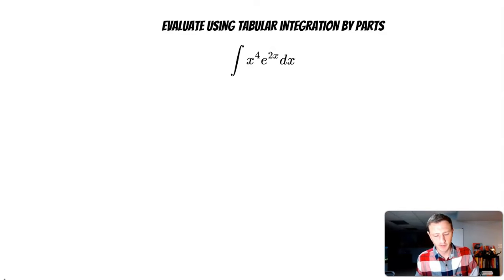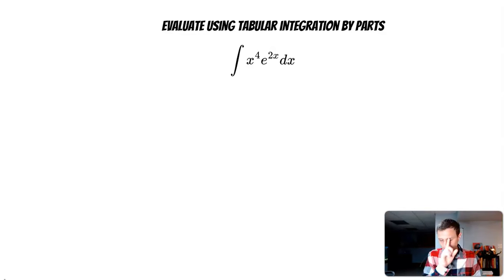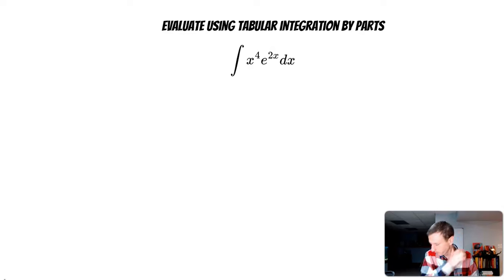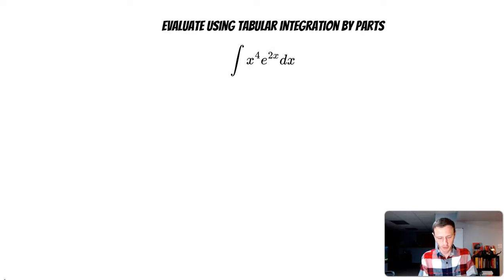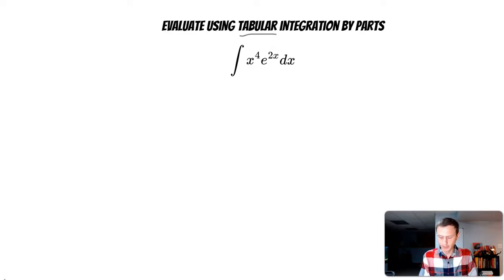In this video I'm going to take a look at evaluating the integral of x to the 4th times e to the 2x, but I'm going to use tabular integration by parts. You could use integration by parts in this problem with no issues, it would just take quite a few steps — you'd have to use integration by parts multiple times. So I'm going to show you this other method called tabular.